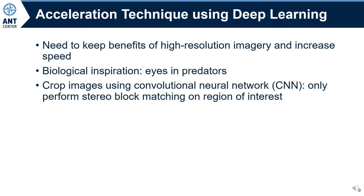How can we get the benefits of high-resolution stereo imagery without the increased computational cost? In nature, biological predators have eyes with small, ultra-high-resolution fovea and a low-resolution periphery. Drawing inspiration from this, we created a convolutional neural network, or CNN, that can dynamically crop the stereo images so that we only perform stereo block matching on the region of interest. The network was trained on simulated imagery from our 3D virtual world.